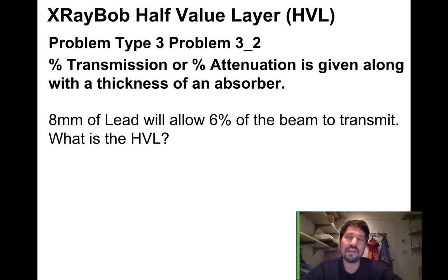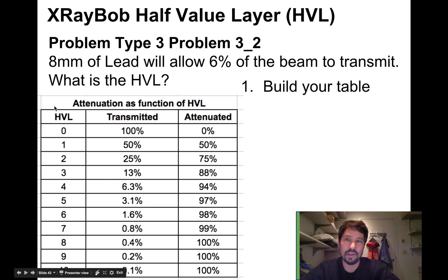Let's try one more here. We're given eight millimeters of lead allow six percent of the beam to transmit. What's the HVL? Again, we'll build our table, HVL, transmitted, and we'll add that attenuation column. We'll find that six percent point and make sure we're in the transmitted column.